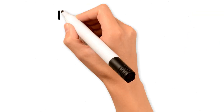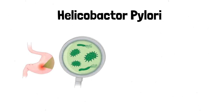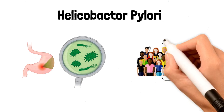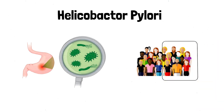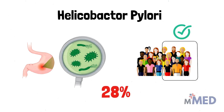H. pylori, or Helicobacter pylori, is a type of bacteria that infects your stomach. H. pylori infection is the leading cause of chronic gastritis in the world. Statistically speaking, at least half of the world's population is infected with H. pylori, and even in developed countries the prevalence is close to 28 percent.